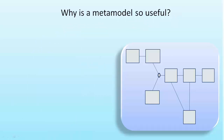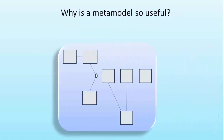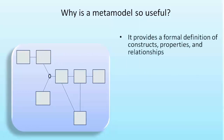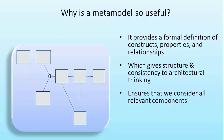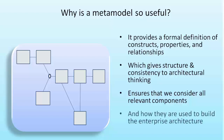So why is a meta model so useful? Firstly, it provides a formal definition of those constructs, the properties, and the relationships between them. Having a formal definition means that we have consistency and can structure our architectural thinking. It also ensures that we consider all of the relevant components. If we've got a detailed meta model of the types of component in the enterprise architecture, then we can be assured that we are considering all of those components whenever we conduct an architecture engagement.